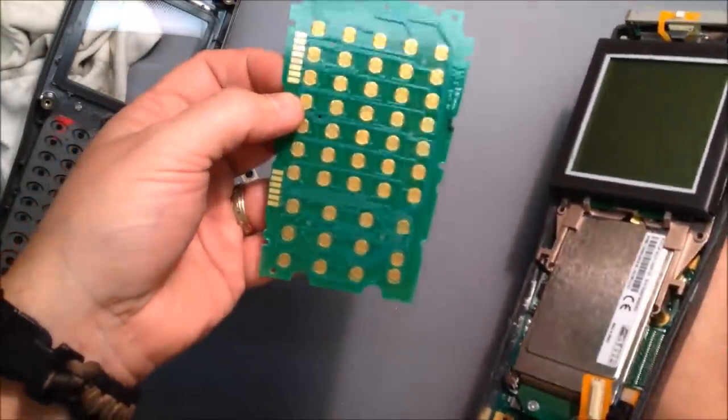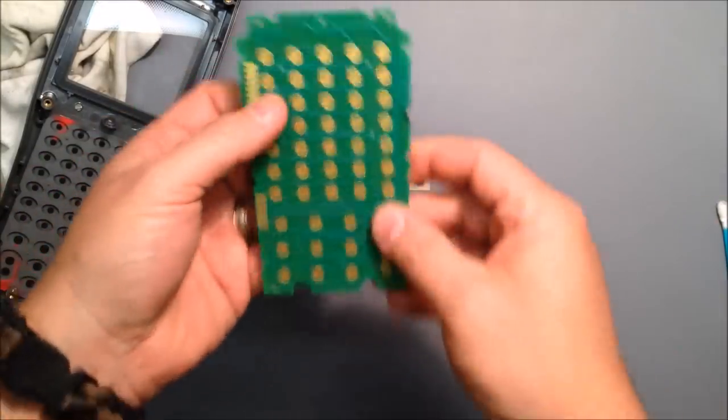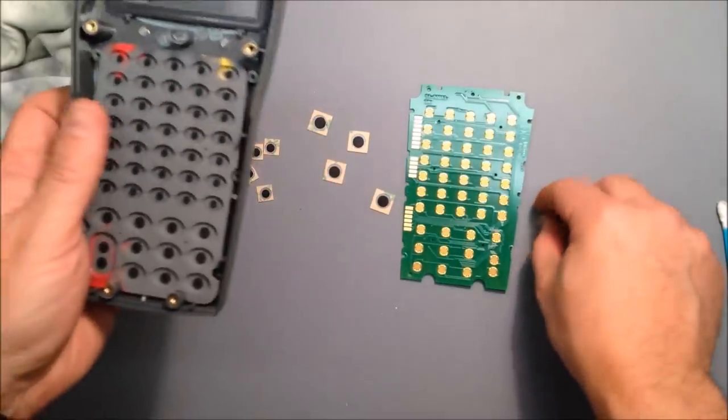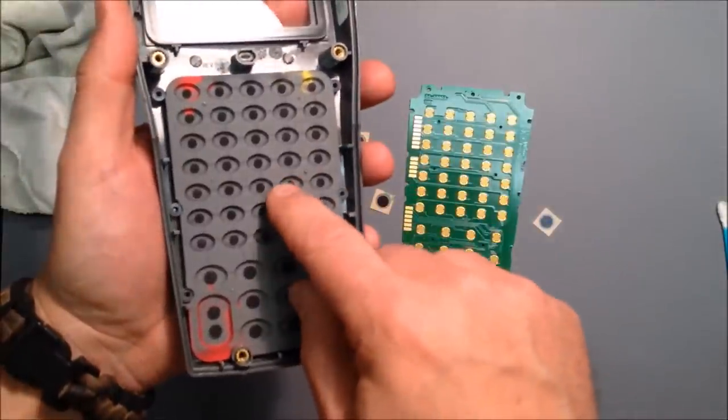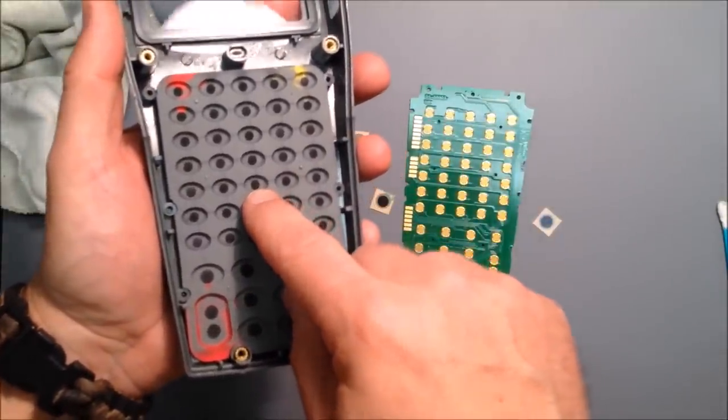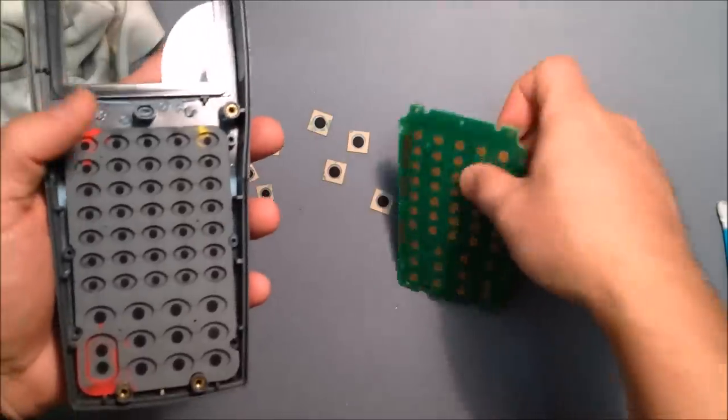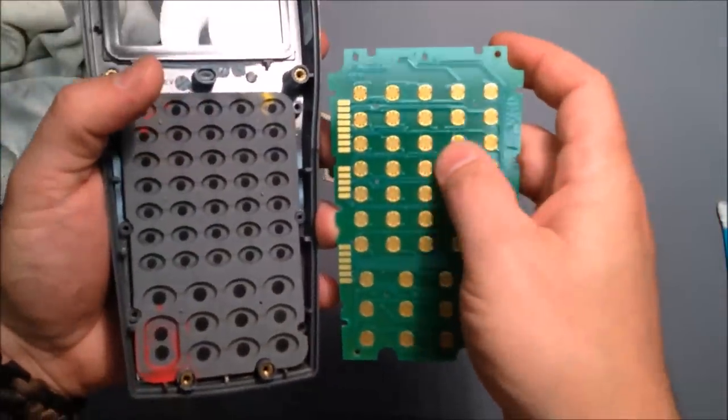If any of the buttons go bad, you can use this. Now the cause of the bad buttons is usually the rubber keypad. The pills wear out, they break down, oils leak out and dirt builds up on the circuit board.